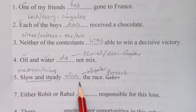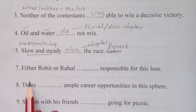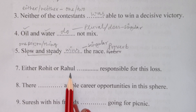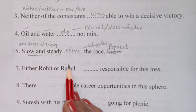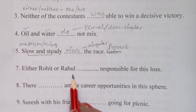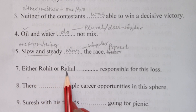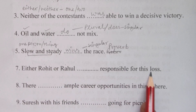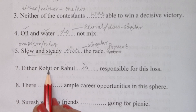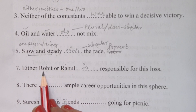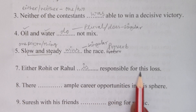'Either Rohit or Rahul responsible for this loss.' When we use 'either...or,' we are talking about one person at a time. Either he has done something or he has done something — they have not done anything together. We are talking about any one out of these two. So the verb should be 'is': 'Either Rohit or Rahul is responsible for this loss.' We are not sure who is responsible, that is why we say 'either...or.'